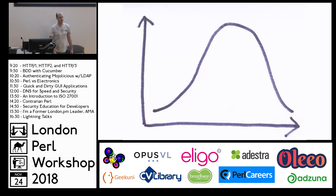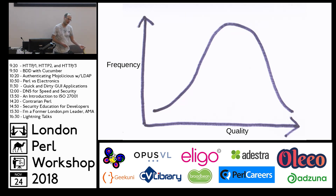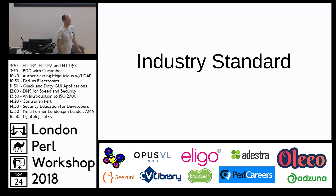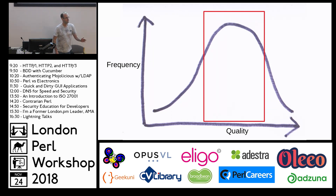To demonstrate that, I want to show you this badly drawn graph with unlabeled axes. Lots of things in life follow this sort of pattern: looking at quality on the bottom going from left to right — low quality on the left, high quality on the right — and the frequency. We see lots of things in the world that are kind of pretty good, a small number that are really good, and a small number that are really bad. Often we talk about industry standards, and that's the thing that's commonly done — the stuff in the middle, not too good, not too bad, but really common.